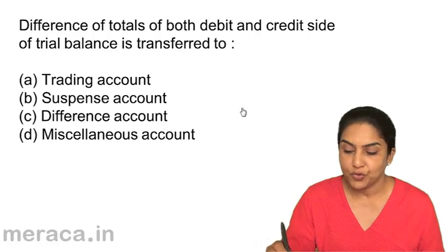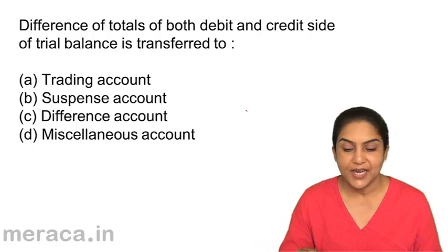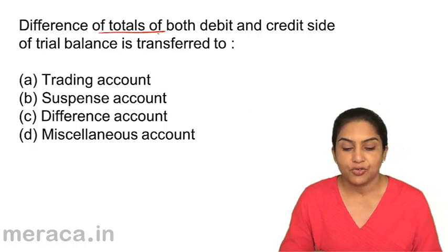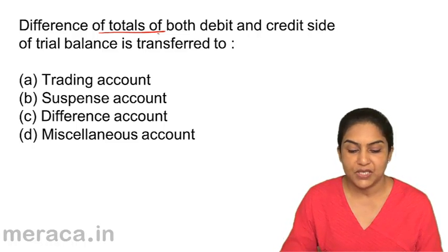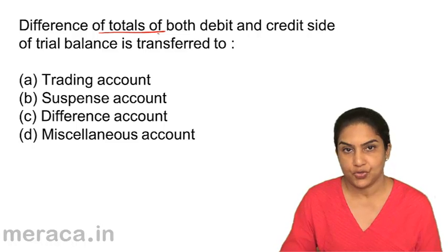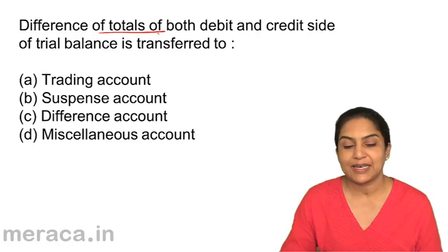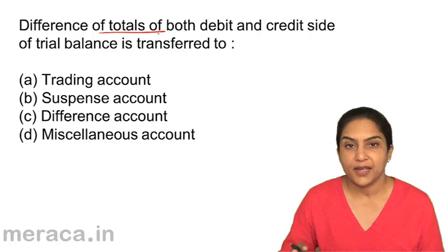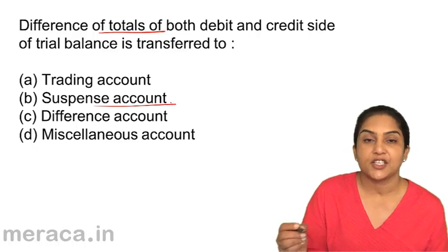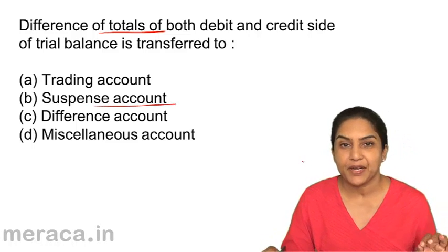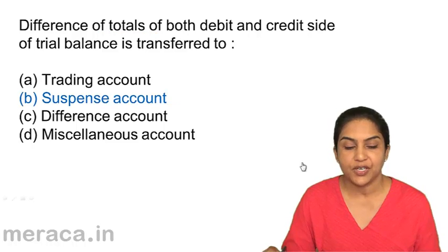Next question: the difference of totals of both debit and credit side of a trial balance is transferred to — A, trading account; B, suspense account; C, difference account; D, miscellaneous account. Trial balance should agree, but if it doesn't agree, this difference is transferred to suspense account. We create a temporary account called suspense account. So the correct answer is B.